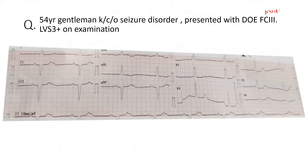He is in NYHA class three. Physical examination showed an LV S3. So all of this is saying that this patient is having some sort of heart failure, probably systolic dysfunction because of the history that this patient has. Murmurs were not found in this patient. So how is the ECG helping us?